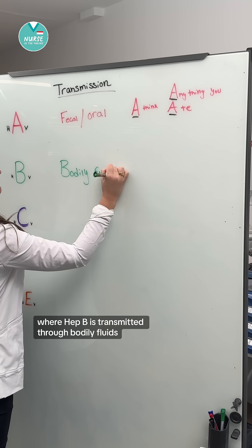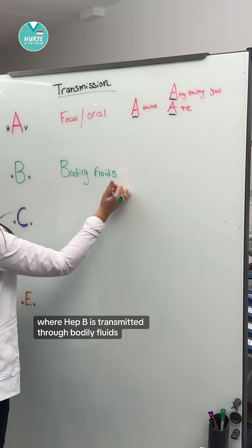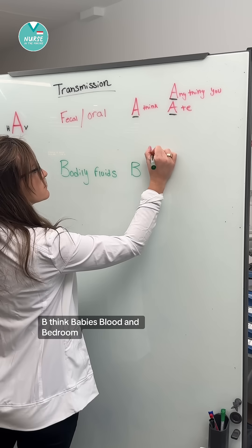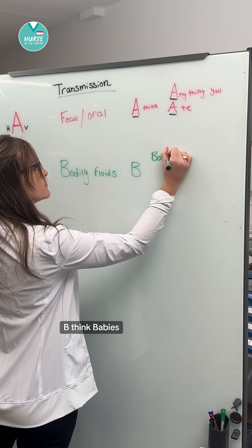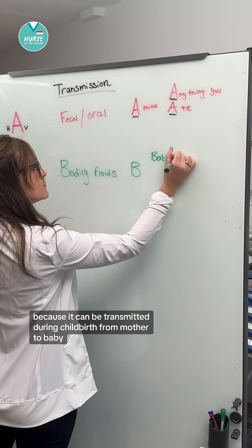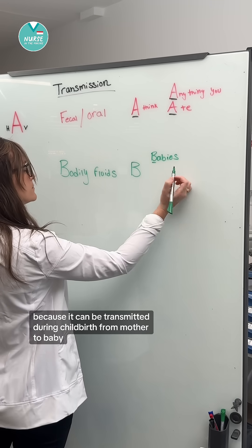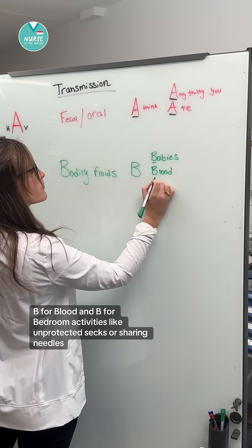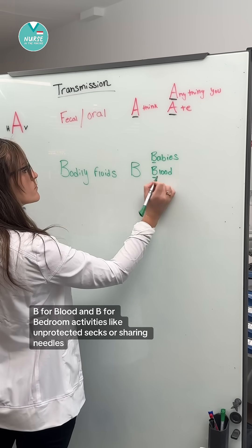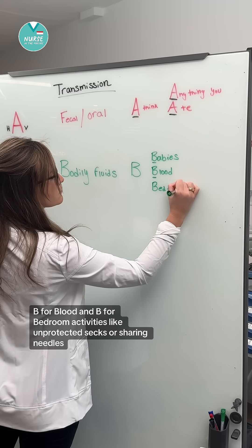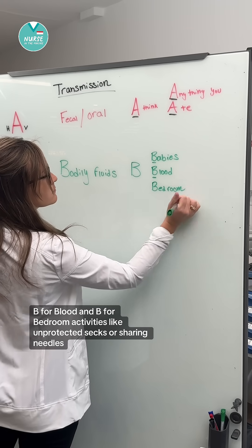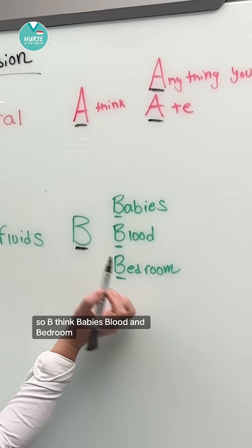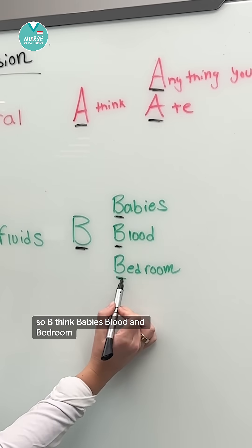Hep B is transmitted through bodily fluids. Think: baby, blood, and bedroom. It can be transmitted during childbirth from mother to baby, through blood, and through bedroom activities like unprotected sex or sharing needles. So for hep B, think baby, blood, and bedroom.